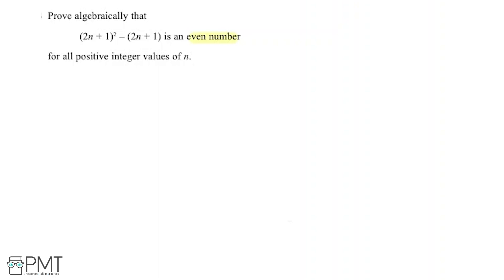Okay, so I'm going to write out what we've got here. So we've got (2n + 1) squared subtracting (2n + 1). Now what does that equal? So we're going to expand this out and see what we get. So we're going to expand these brackets first.